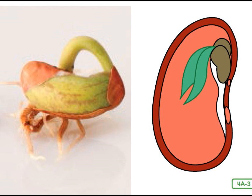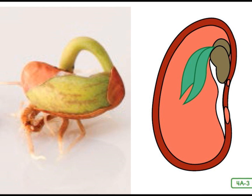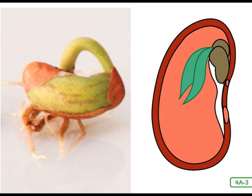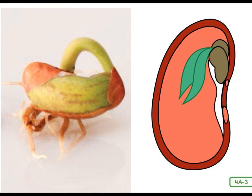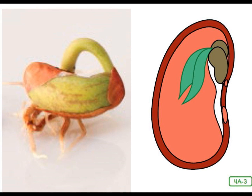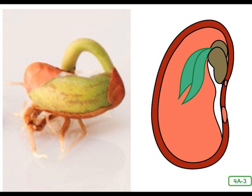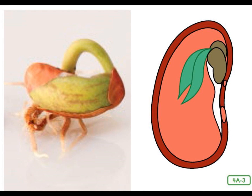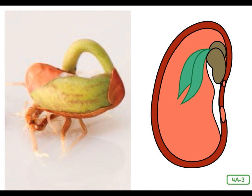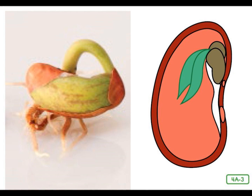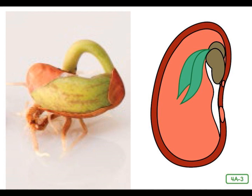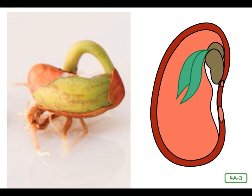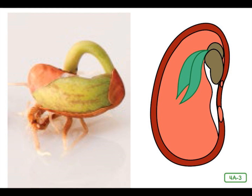Once the seed germinates or sprouts, it grows and develops into a young plant with roots, a stem, and leaves. Roots, stems, and leaves are the three main parts of a young plant. The first leaves unfold to allow photosynthesis to begin. Photosynthesis is a process by which plants make their own food as well as oxygen. Plants use sunlight and water to make food in the form of glucose, a type of sugar.